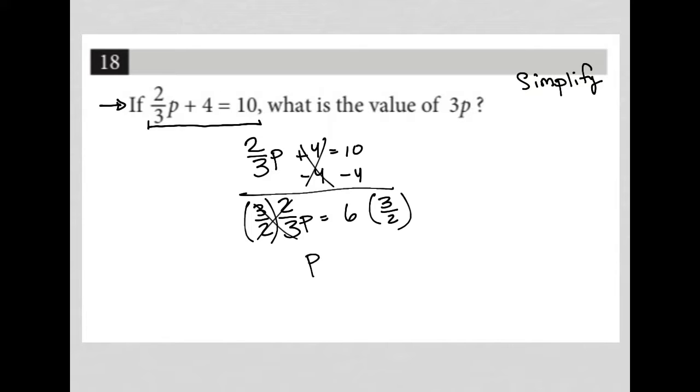This isolates p for me. I'm going to treat this like it's six over one and multiply directly across. So six times three is 18, one times two is two. So I get p equals 18 over two. Now, 18 divided by two can be simplified further to nine. So I get p equals nine.